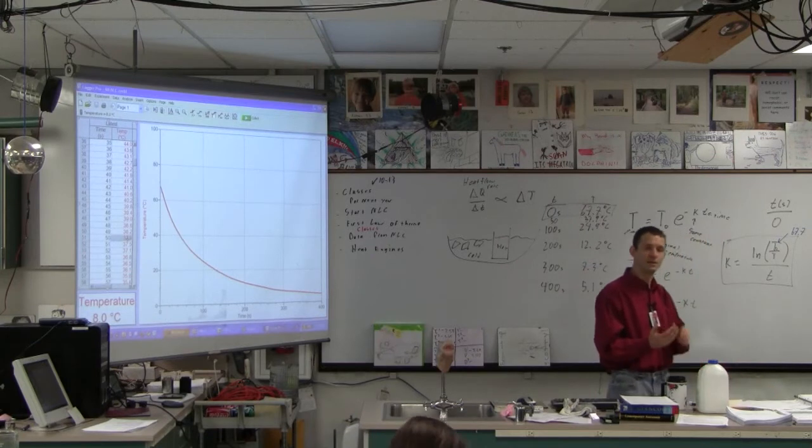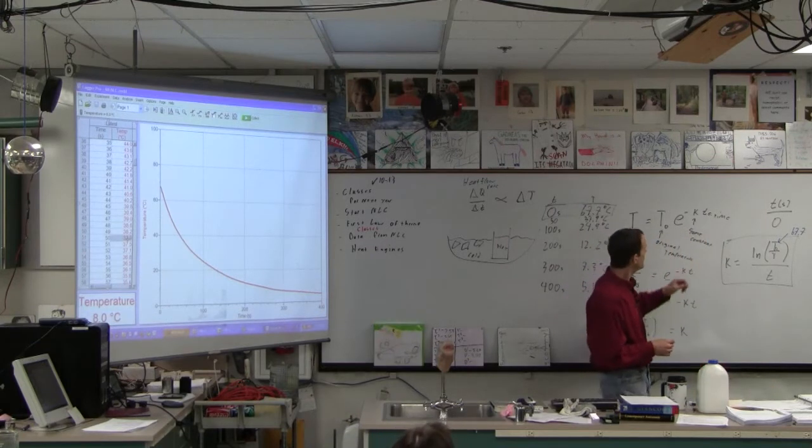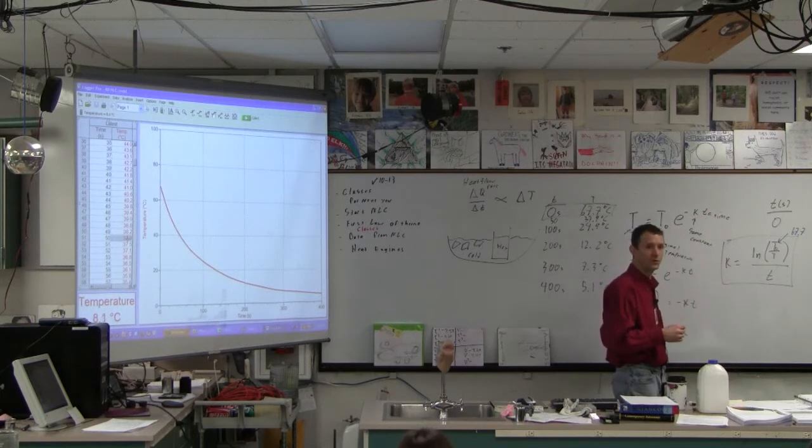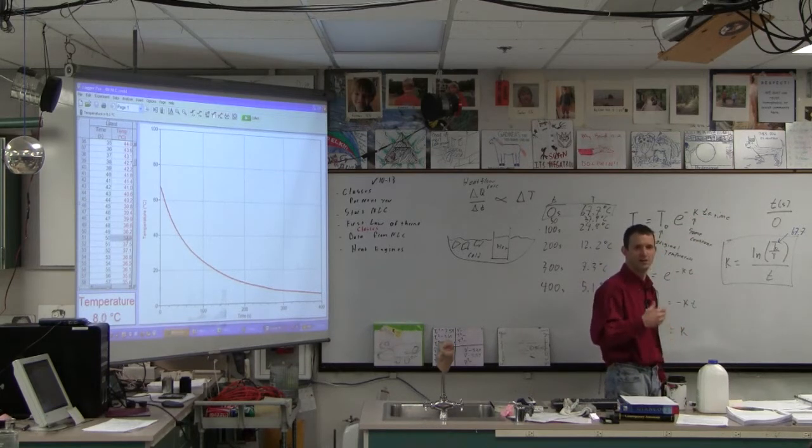So the question is really, let's use our critical thinking here. Is there a trend? If K trends, say, downward all four times, probably it's not the right model, is it? There's something else going on.